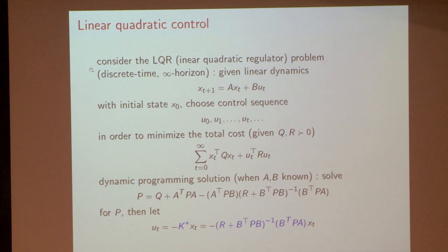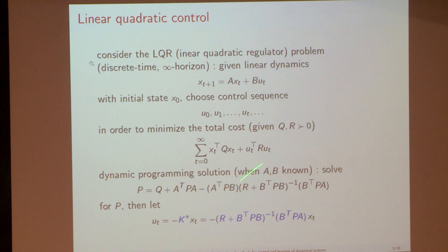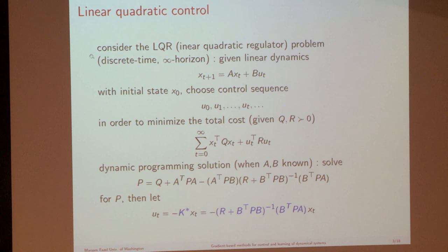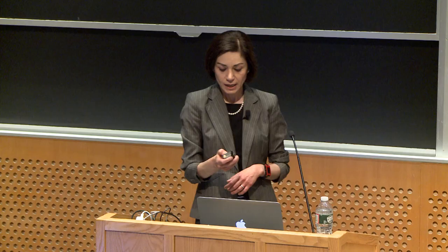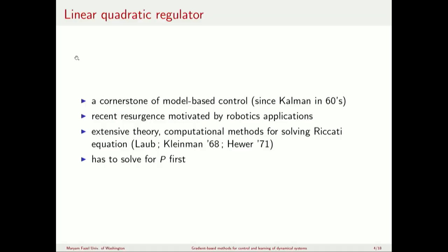In this problem, the optimal control input is a static state feedback: there exists a fixed matrix K such that at every point in time your state is multiplied by K. K-star is the optimal controller that minimizes the LQR cost among all possible controllers, given by a closed-form formula in terms of P. This is the classical theory — a cornerstone of model-based control since the 60s going back to Kalman — and there is a recent resurgence of interest motivated by robotics applications interested in policy updates.